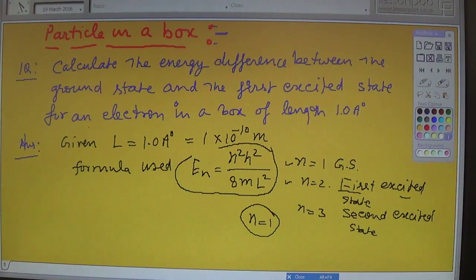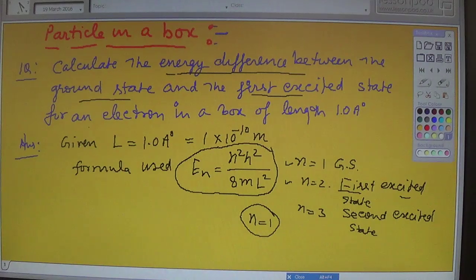This is the formula which we have to use to calculate the energy difference between the ground state and the first excited state. We have to find out the difference between n equals two and n equals one state. This is the energy difference delta E, so E2 minus E1 we have to find out.